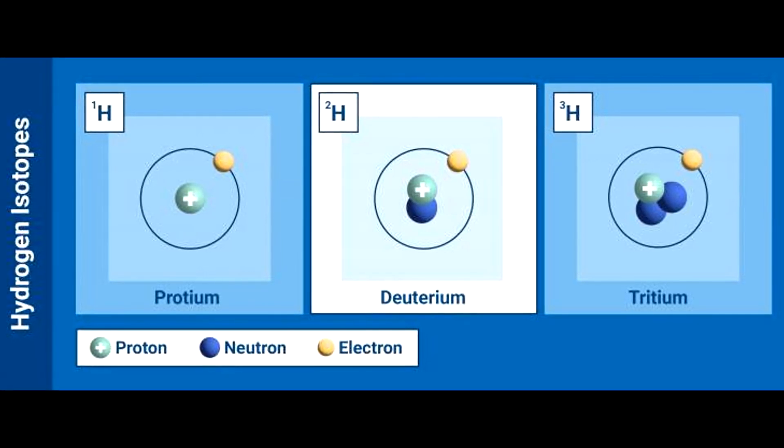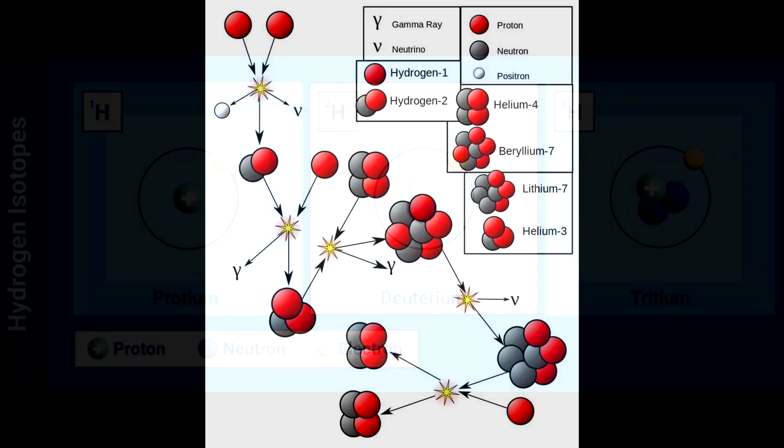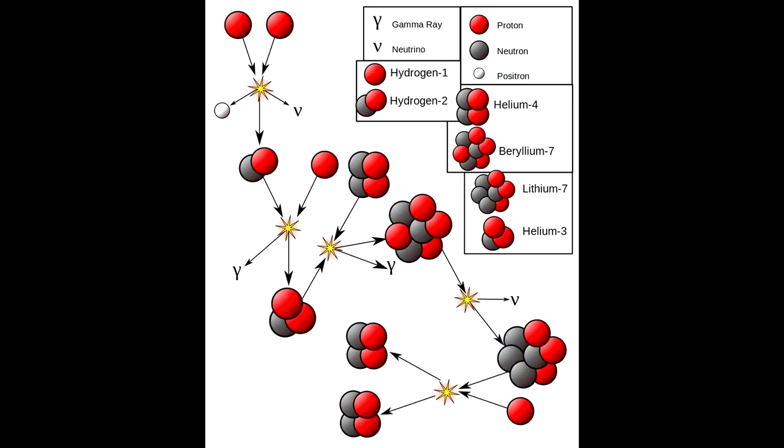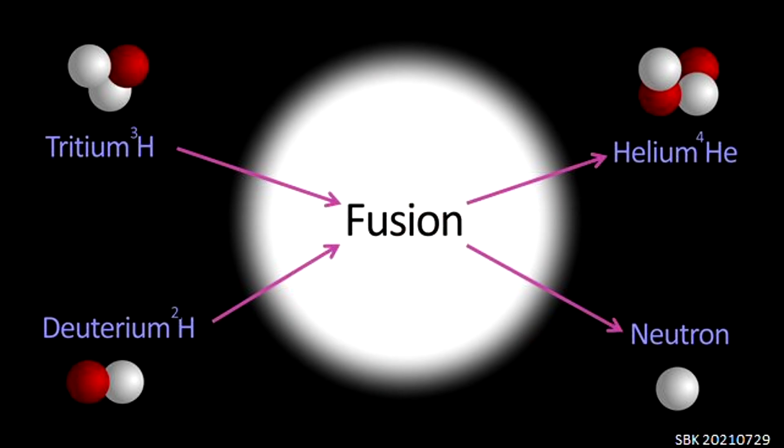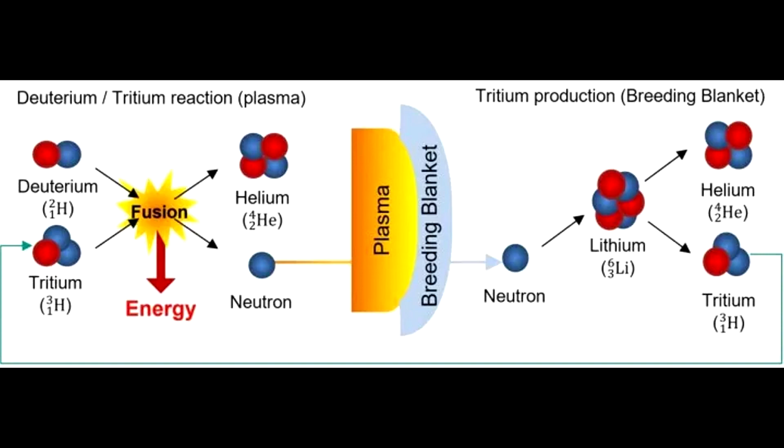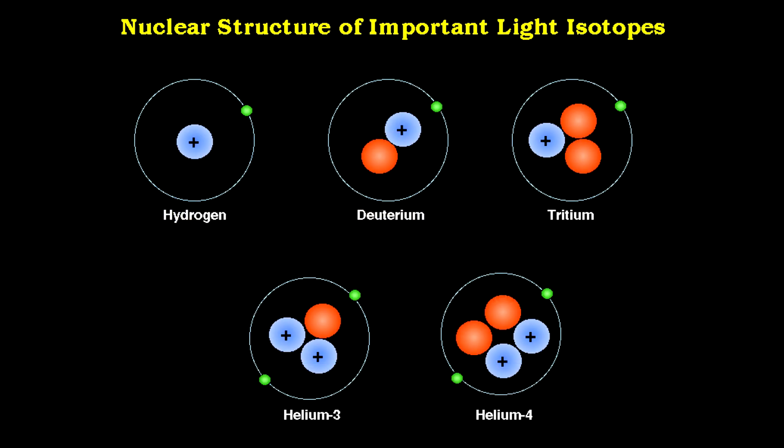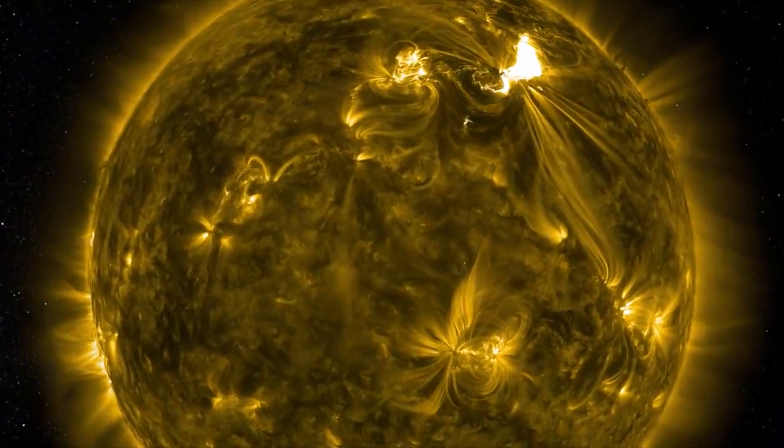Deuterium, in turn, joins one more hydrogen atom and helium-3 is formed, and one more photon is released. When two helium-3 atoms collide, helium-4, two hydrogen atoms, and one more photon are formed.